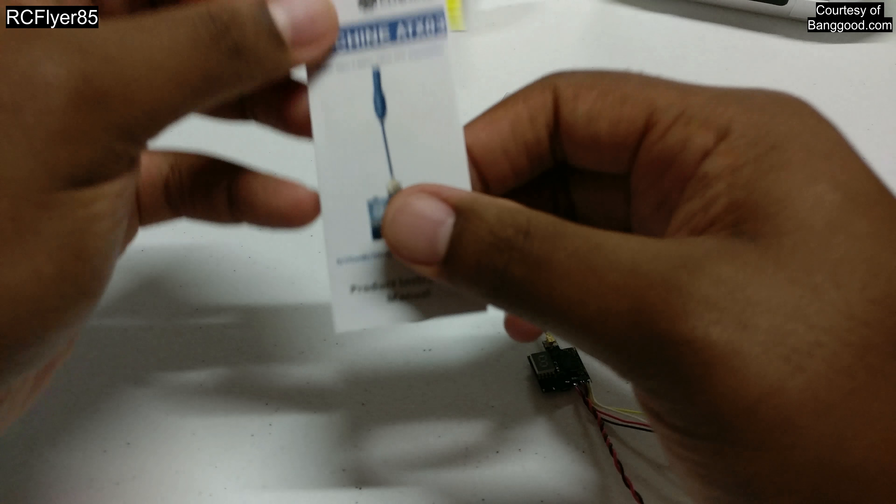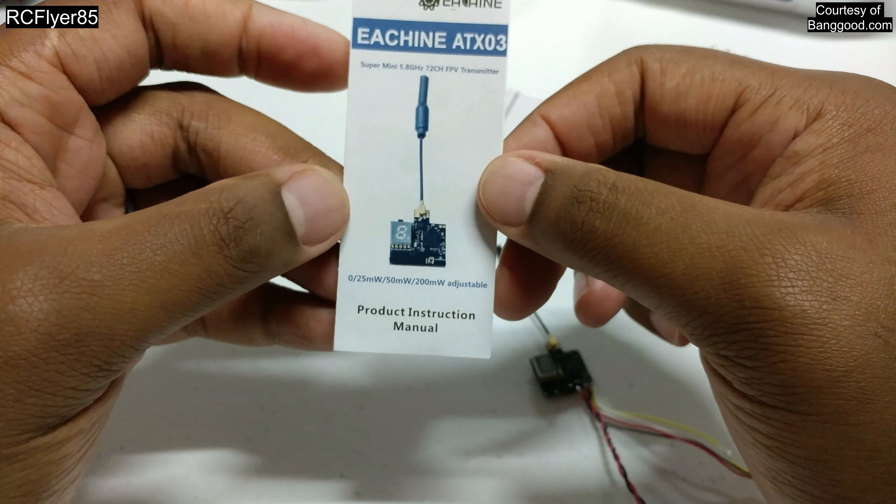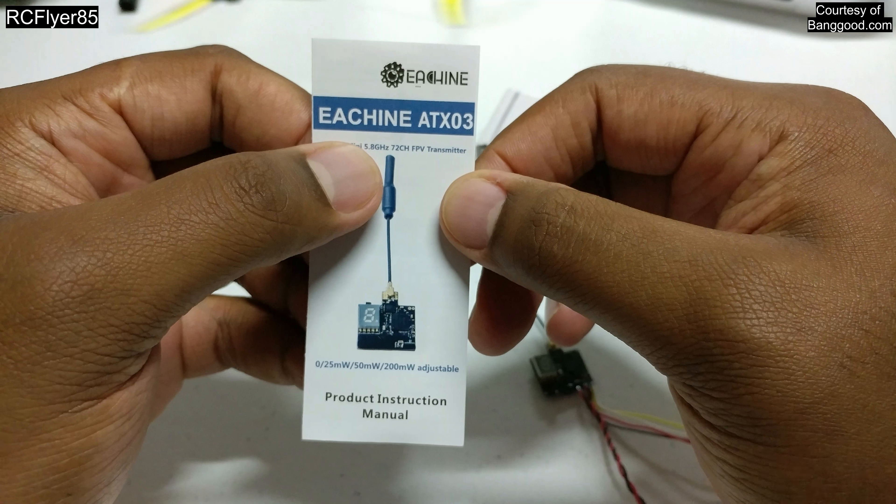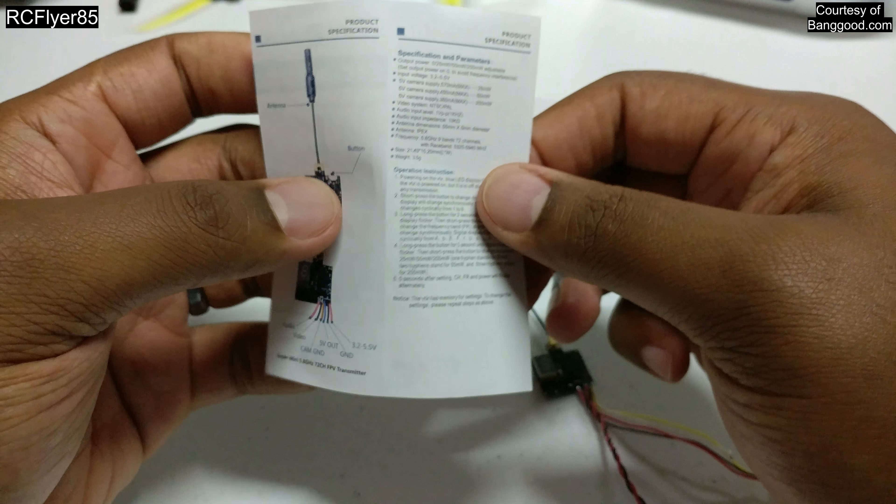A couple features of this as you can see right here. This is a switchable video transmitter. So you have off, 25, 50, and 200 milliwatts. It is a 72 channel video transmitter so that's pretty good. You should have any channels and bands you're looking for.